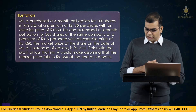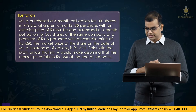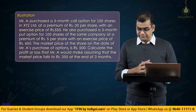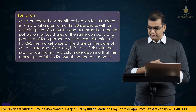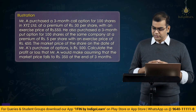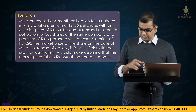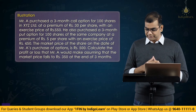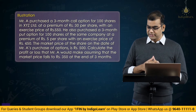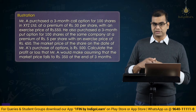Mr. A purchased a 3-month call option for 100 shares in XYZ Limited at a premium of Rs. 30 per share with an exercise price of 550. He also purchased a 3-month put option for 100 shares of the same company at a premium of Rs. 5 per share with an exercise price of 450.